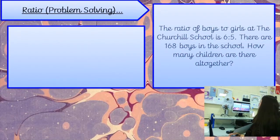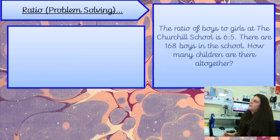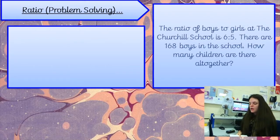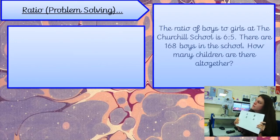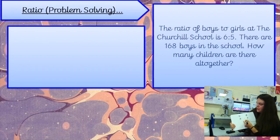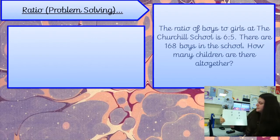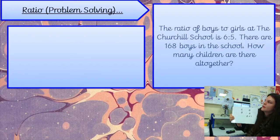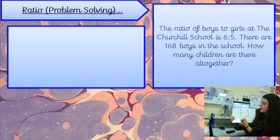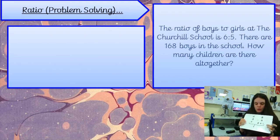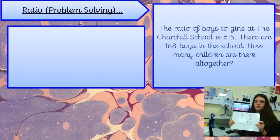Here's our next question. The ratio of boys to girls at the Churchill School is six to five. First, let's write down the information we know — boys and girls, ratio six to five. There are 168 boys in the school, so I'm going to write 168 under boys. How many children are there altogether? We don't know how many girls there are, and we want to know how many there are altogether. Talk to your partner — what information is going to help us work out how many girls there are?